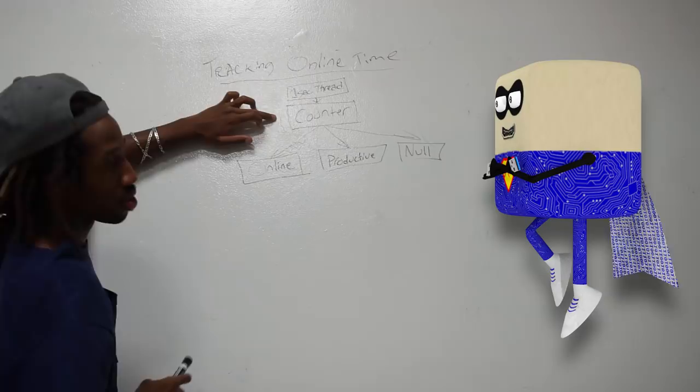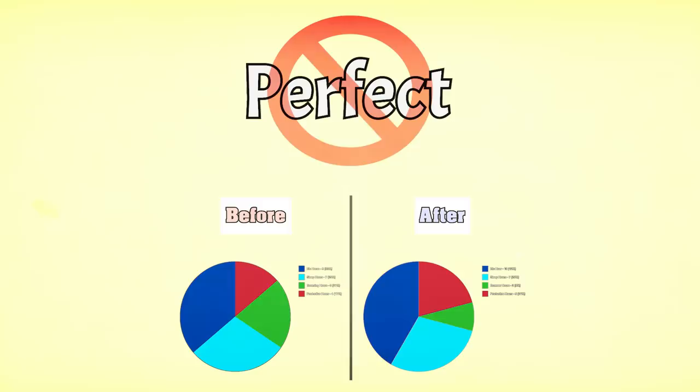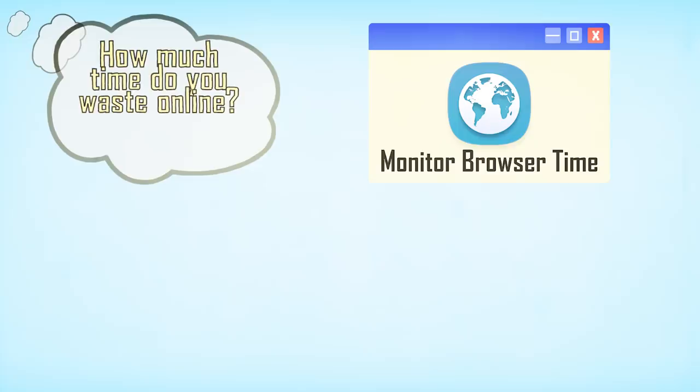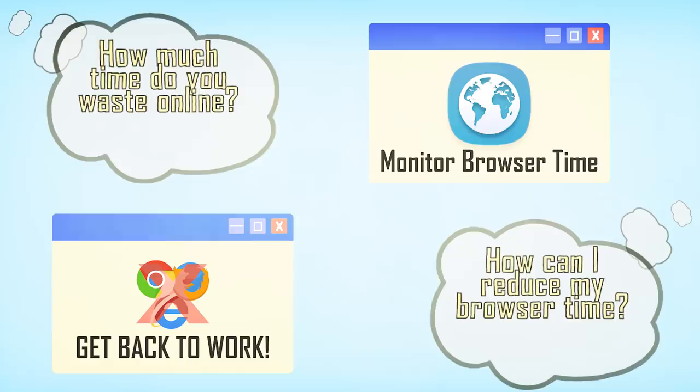It's not the perfect solution, but it's better to have something to work with than nothing. You can figure out how much time you're wasting online by downloading my online browser time software — link at the top of the description. You can reduce your browser time by downloading my get-back-to-work software as well. I hope you enjoyed today's episode, and if you download and use this software, please share your results with me on Twitter and Instagram — my handle is at Steph Stuff.